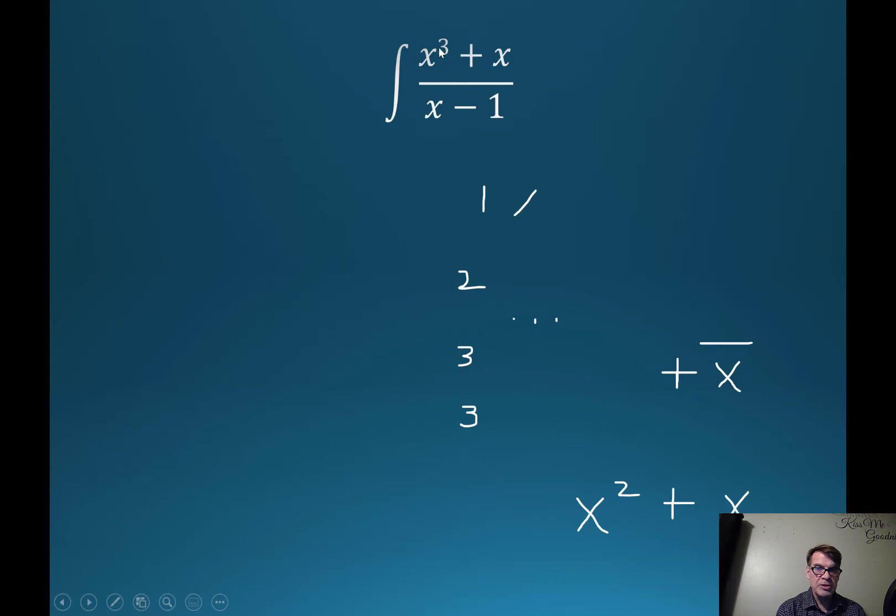Because the numerator is a higher power than the bottom—it's to the third power and this is the first—the way we're going to do it, I don't know how to do it other than long division. Maybe you've learned a better way, but this is the way I know how to divide a polynomial by a polynomial. So this is the top, that's what we're dividing into, and this is what we're dividing by, x minus 1.